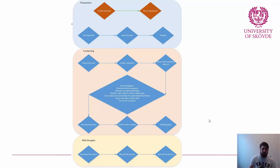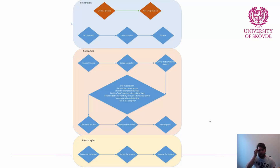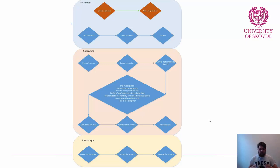You will definitely need certain things in your response kit: maybe a write blocker, a device to extract data from cell phones, tools like FTK Imager for memory extraction or forensic disk images, Paladin, Sleuth Kit, or whatever else your process requires. Assemble everything into a response kit, put it in a bag, and have it ready to go.